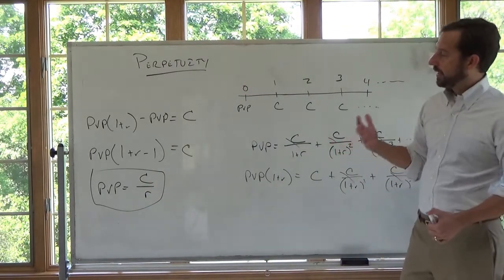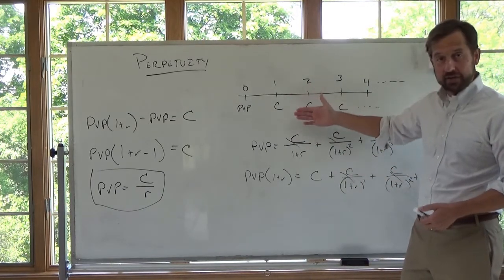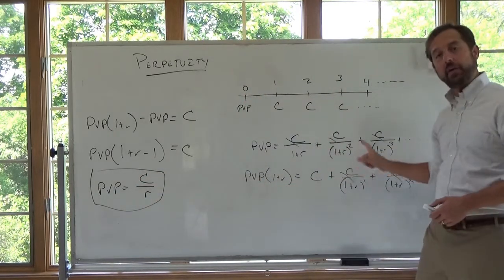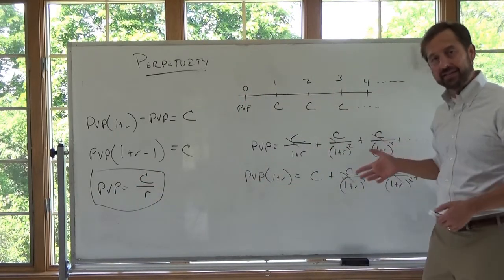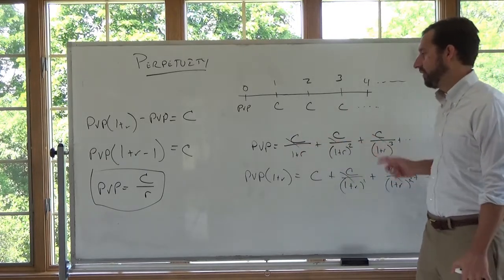The big takeaway from this is that if we're going to calculate the present value of perpetuity, this is the same as discounting each individually. You will get the same answer. So if you want, sometimes when I'm programming something, I might discount each individually.